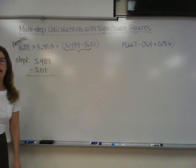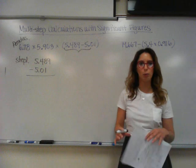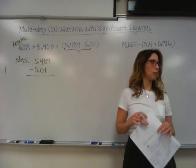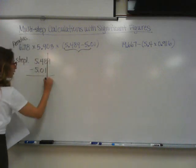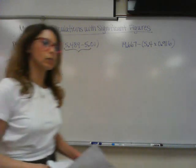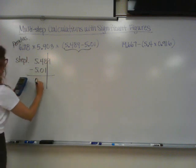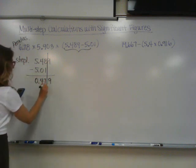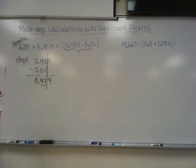When I add and subtract, I line up my decimals and I draw a line after the term with the fewest decimal places — which would be 5.01. So you're going to draw a line there. In your calculator, 5.489 minus 5.01 gives you 0.479. Underline the 4 and 7 — those are the only digits to the left of the line that are considered significant.